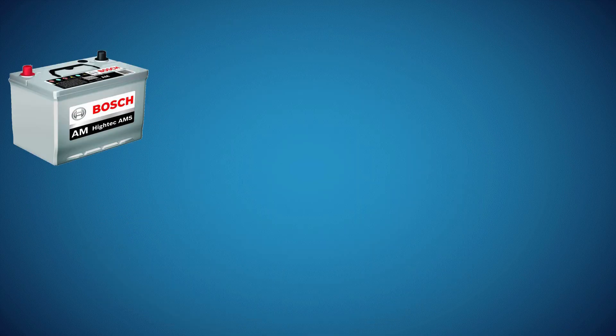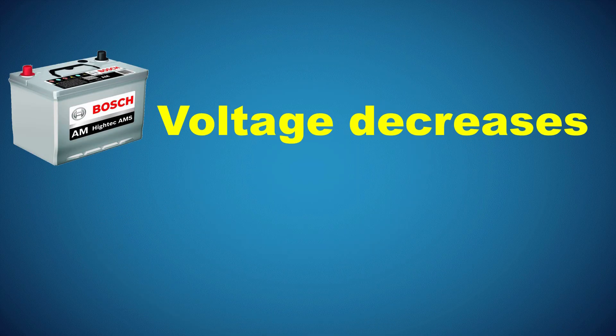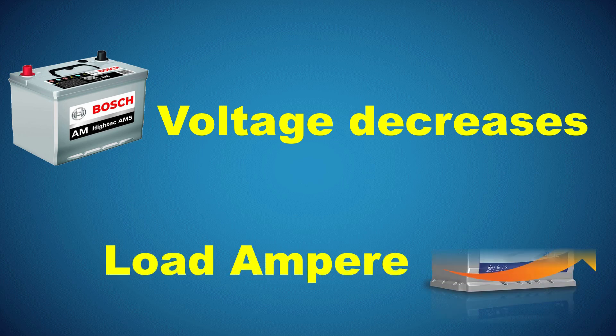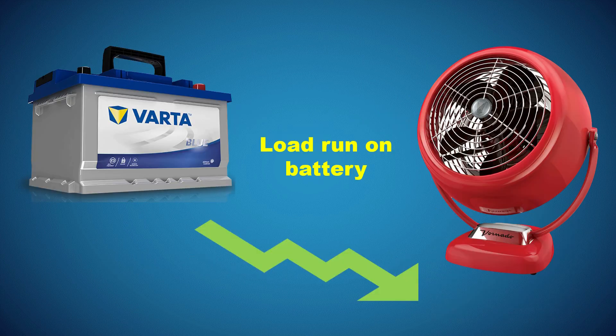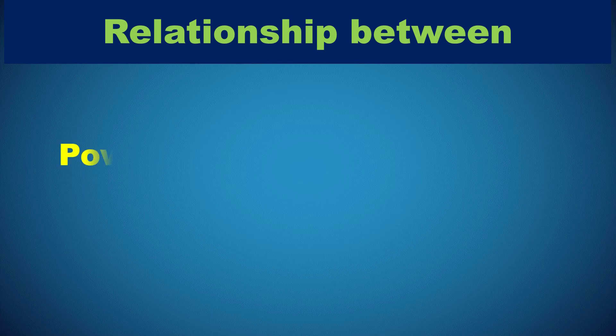When a battery voltage decreases, the load current in amperes can increase to maintain the same power output. This behavior is due to the relationship between power, current, and voltage.